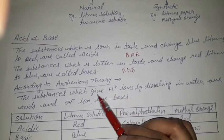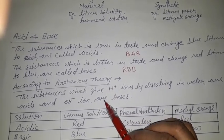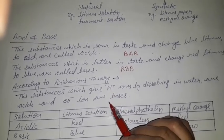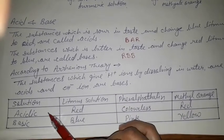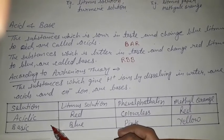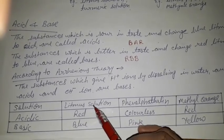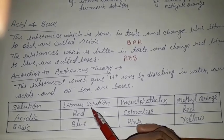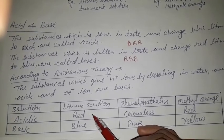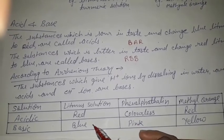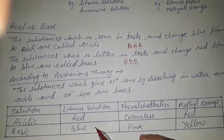And substances that give OH⁻ ions when dissolved in water are known as bases. So when an acidic solution comes in contact with litmus solution, blue litmus converts into red — that is acidic. When a basic solution comes in contact, red litmus converts into blue — that is a basic solution.